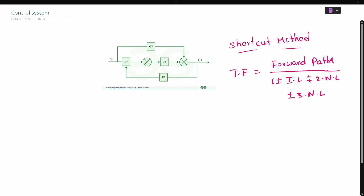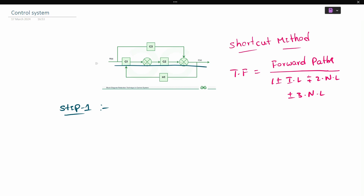We can find out the number of forward paths in the block diagram. We can use any number of forward paths. In the denominator, we start with one plus or minus terms. We find individual loops, then two non-touching loops. This is the first step — we find our forward paths from the block diagram.